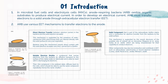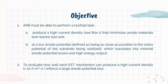The third EET mechanism is the Solid Component — a solid component that is part of the extracellular biofilm matrix and is conductive for electron transfer from the bacteria to the solid surface. This mechanism is supported by the recent discovery of the possible role of cellular pili as nanowires, which are being characterized for their capability to conduct electrons. Other components may also be conductive and contribute in EET, such as extracellular cytochromes or bound electron mediators. Coming to the objectives of this review paper, there are two main objectives. First, ARB must be able to perform a two-fold task: to produce a high current density that minimizes anode materials and reactor size, and at a low anode potential — defined as being as close as possible to the redox potential of the substrate being oxidized — which translates into minimal anode potential losses and high energy output. The second objective is to evaluate how well each EET mechanism can produce a high current density greater than 10 A/m² without a large anode potential loss.